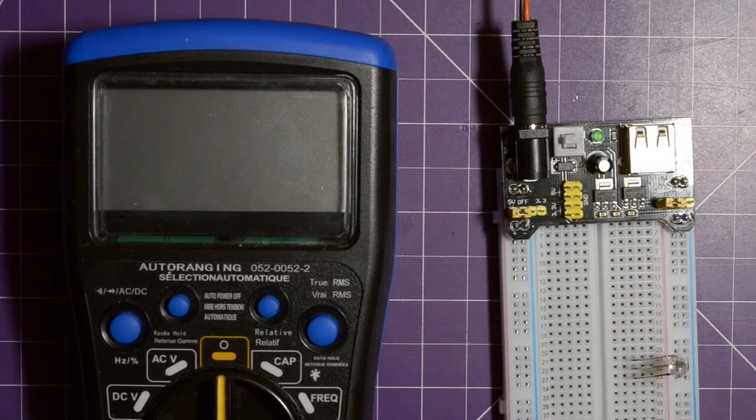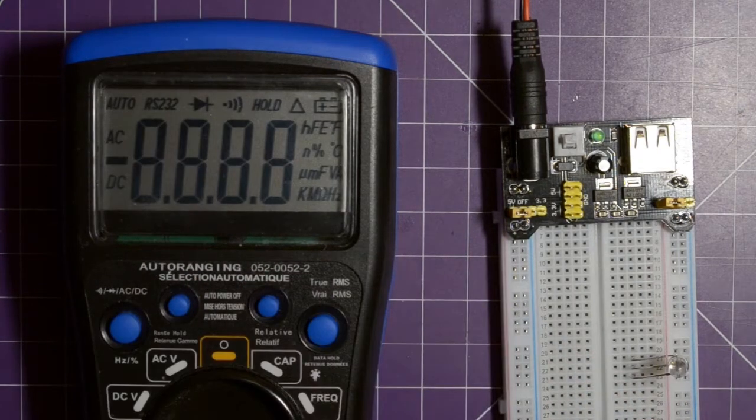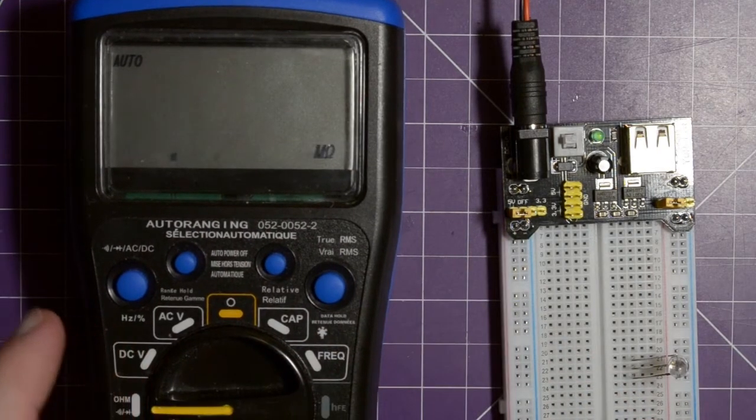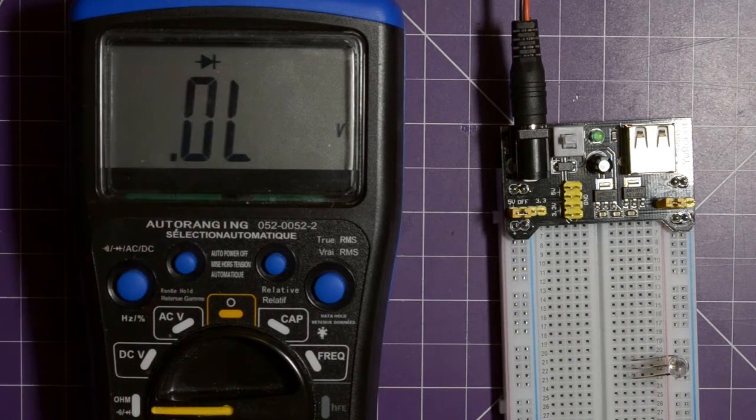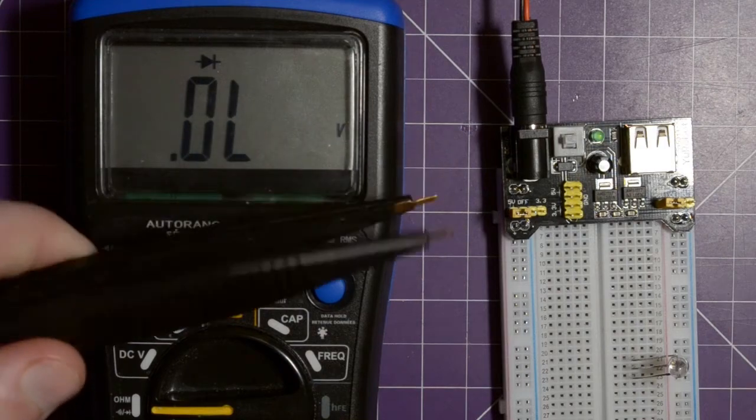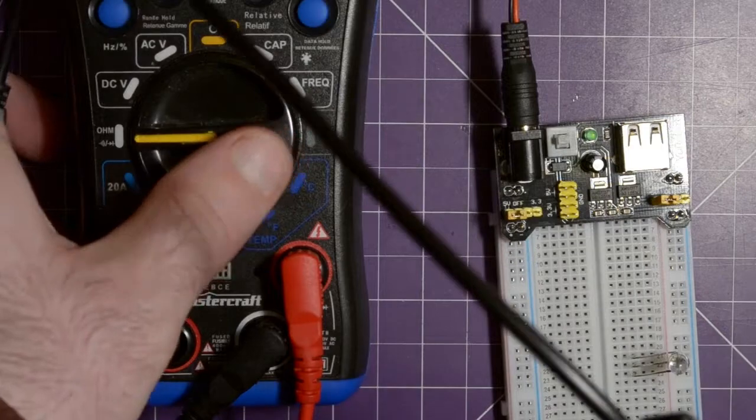I'm gonna set my multimeter to diode check, so on this meter you go into ohms and then you hit this button once and there you go, diode check. I've got these little test pliers connected to my multimeter. I got these in a mailbag video.